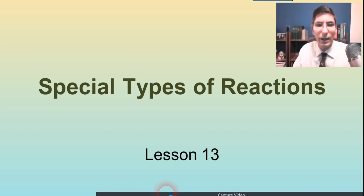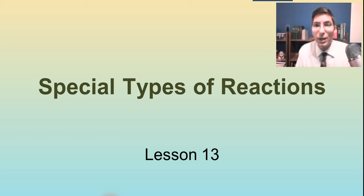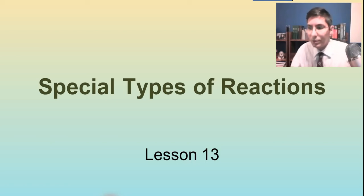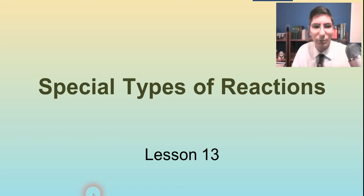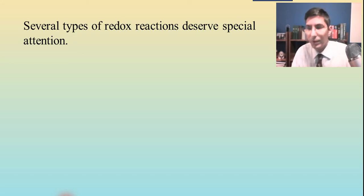Welcome to AP Chemistry. I'm Jeremy Krug and in this video we're going to be looking at special types of reactions. This is a series - if you're following my complete AP Chemistry course on YouTube, hopefully you've already watched lesson 11 on net ionic equations and precipitation reactions, and lesson 12 which introduced redox reactions. In lesson 13, we're looking at some more redox reactions and adding in a few other types as well. There are several types of redox reactions that deserve special attention, and the first one is combustion reactions.